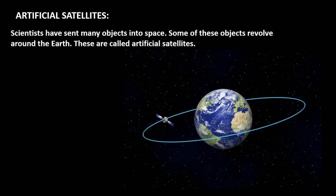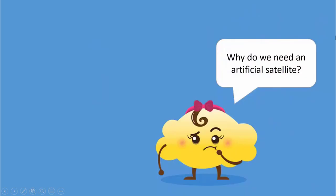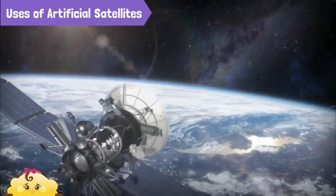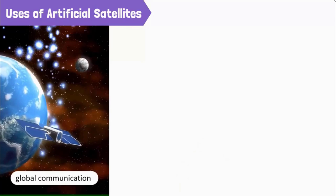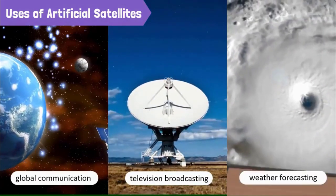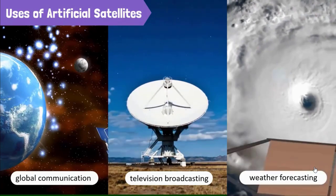But students, a question arises: when we already have 173 natural satellites, why do we need artificial satellites? To answer this, watch this short video. When we already have so many natural satellites in space — these satellites are used to transmit and receive signals, reports, and pictures from outer space. We also use these satellites for global communication, television broadcasting, and weather forecasting. I hope you got it from this video. So let's learn about the explanation of artificial satellites.